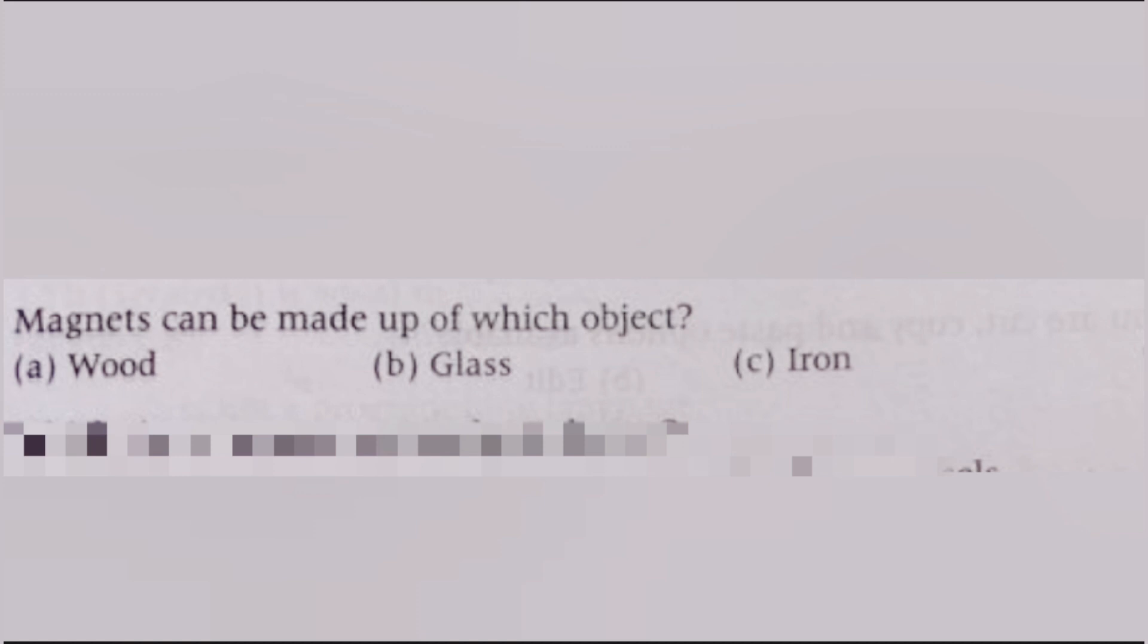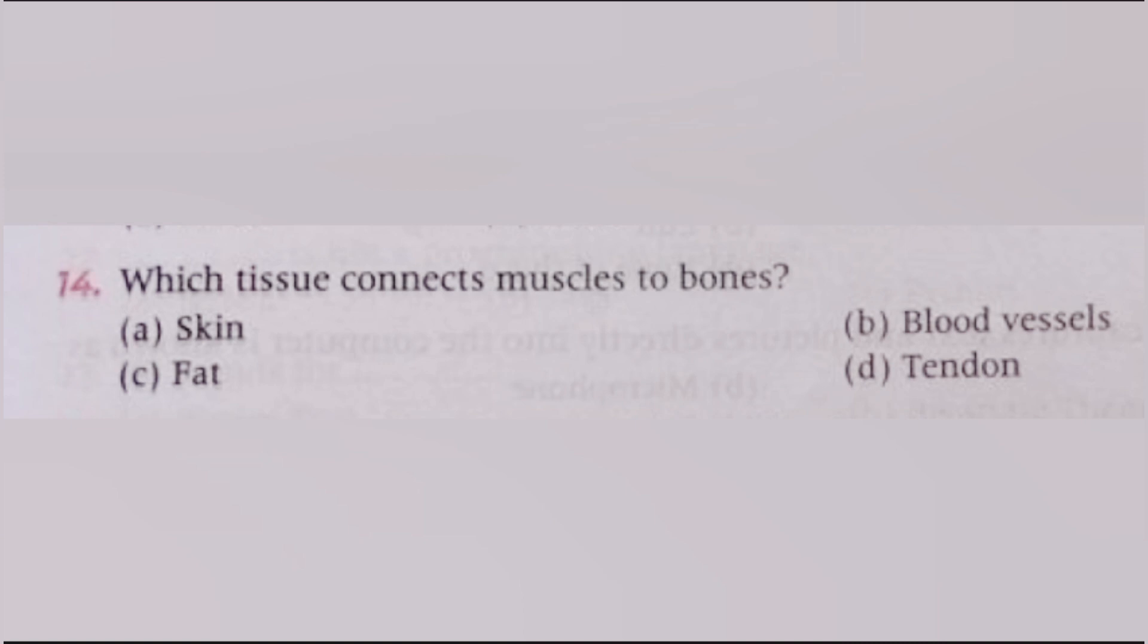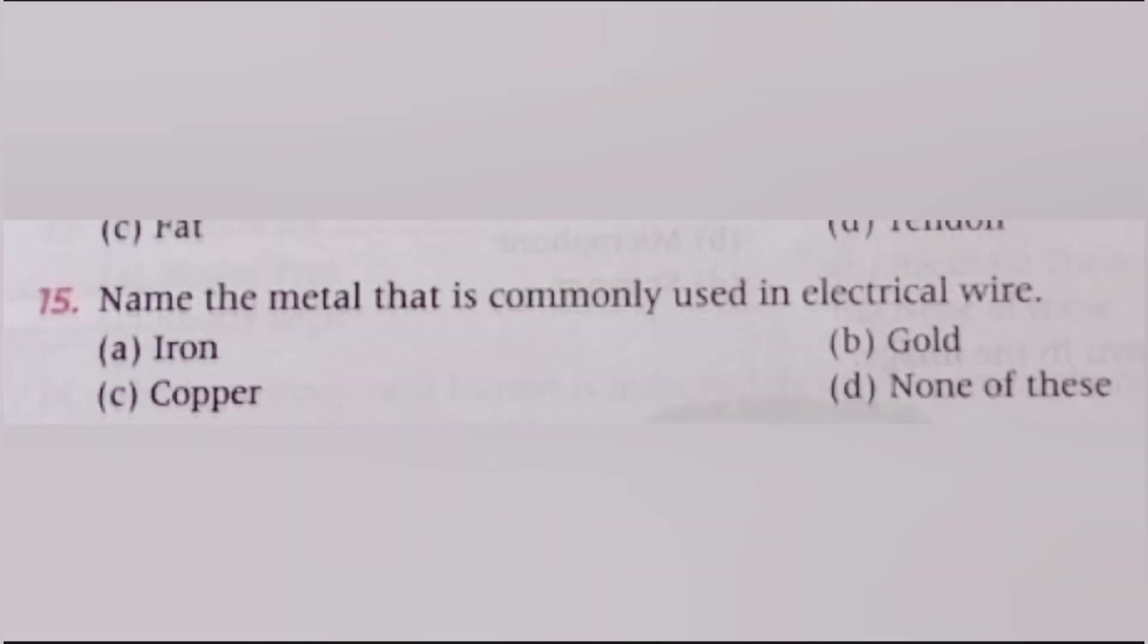Next, which tissue connects muscles to bone? Skin, blood vessels, fat, tendon. The answer is D, tendon. Next, name the metal that is commonly used in electrical wire: iron, gold, copper, none of these. The answer is C, copper.